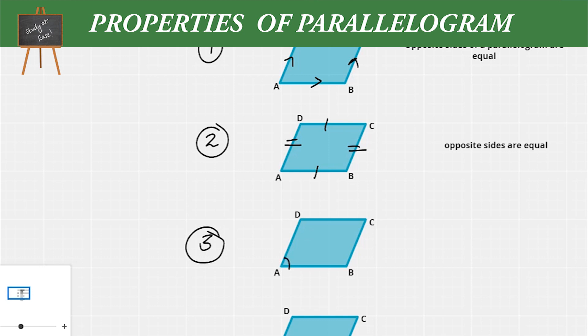Moving on to the third property: in this parallelogram, the opposite angles will be equal, as in angle A is equal to angle C and angle B is equal to angle D. So in a parallelogram, the opposite angles are always equal.